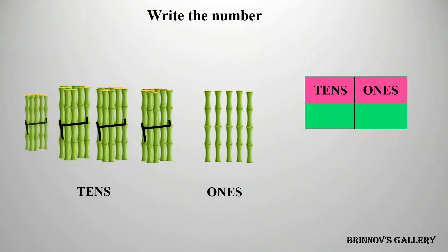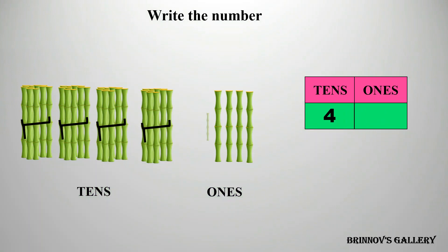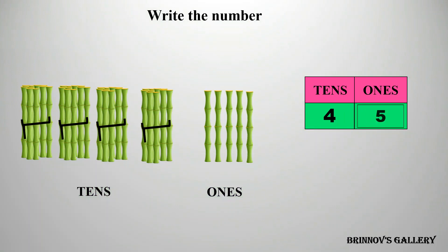1, 2, 3, 4 — 4 tens. 1, 2, 3, 4, 5 — 5 ones. The number is 45.